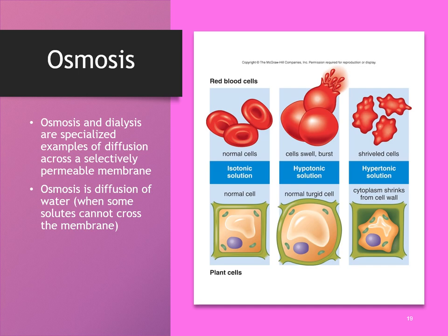In a hypotonic solution, the water surrounding the cell has a lower concentration of salt, meaning the concentration of salt inside the cell is higher. Something helpful to remember is that water follows salt — wherever there's the highest concentration of salt, water will go. So in this situation, water is going to move inside the cell to equalize the concentrations on both sides of the membrane, which could cause the cell to rupture or lyse.